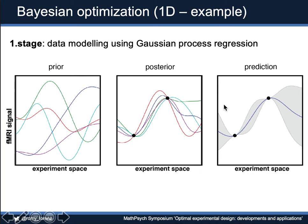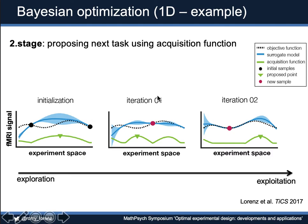This uncertainty information is leveraged in the second stage where an acquisition function is used to propose where to sample next — this is the stage that closes the loop. We're using an expected improvement acquisition function to understand where in the experiment space we can sample to improve the expected function. We would sample where there is the highest mean and also the highest uncertainty of improvement. In the next iteration, we expose the subject to that experimental condition, refit the Gaussian process, recompute and maximize the acquisition function, and then sample again.